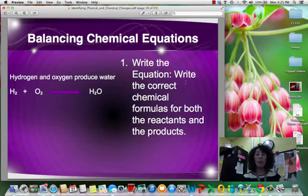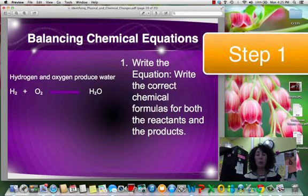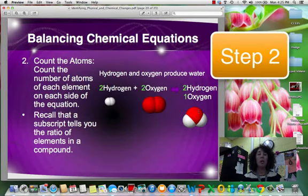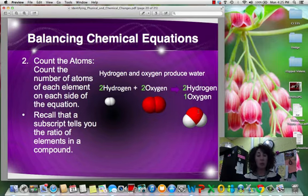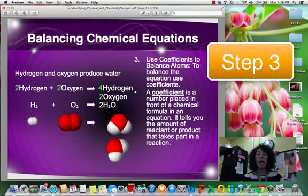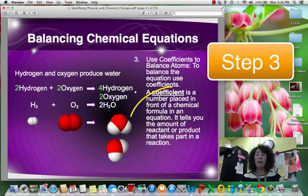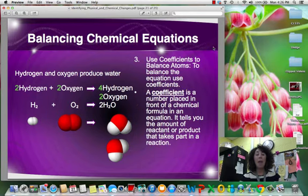And so when we're balancing equations, you write the equation. You write the correct chemical formulas for both the reactants and the products. And you can see that we're working with water here. You count the number of atoms of each element on each side of the equation. Don't forget what those subscripts are telling you. They're giving you the ratio of the elements in the compound. And then you're going to use those coefficients to balance the atoms. And that number is the number that you're going to put in front of the chemical formula, and it's going to tell you how many molecules of that particular compound you have.